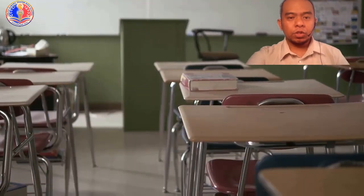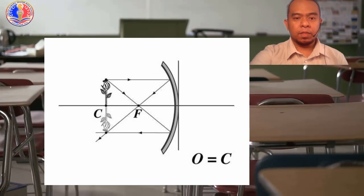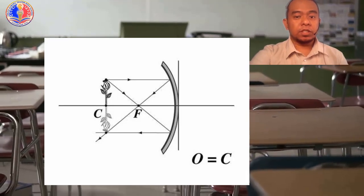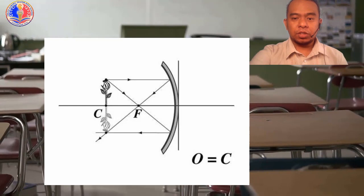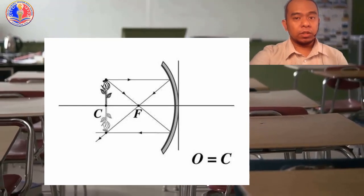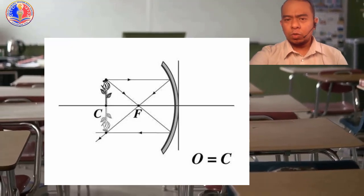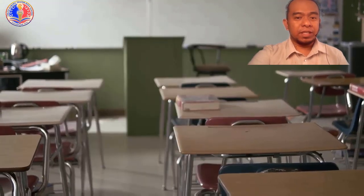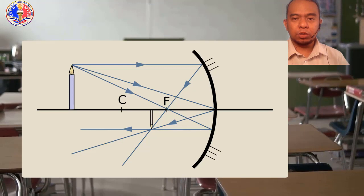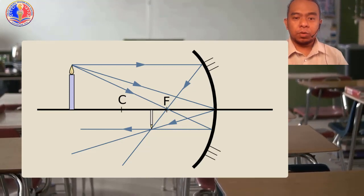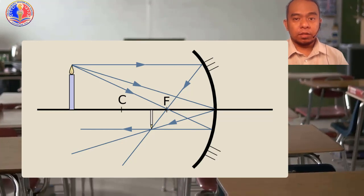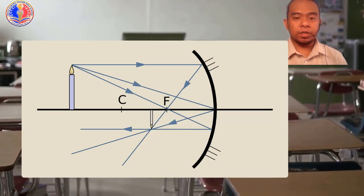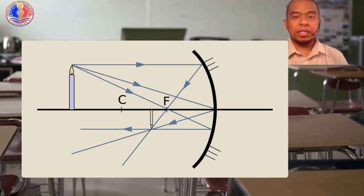If the position of the object is at C, the position of the image formed is also at C. The size of the image is same size, and the nature of the image is real and inverted. Take note that we are still on concave mirrors. What about when the object is beyond C? Say it's further than the center of curvature. Now the image form is between the focus and the center of curvature. The size of the image is smaller, and the nature of the image is real and inverted.